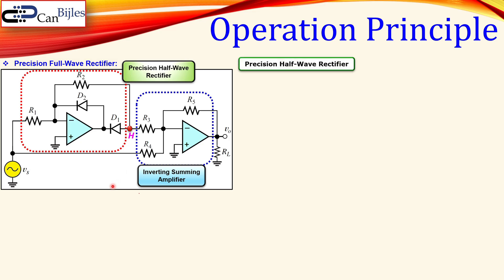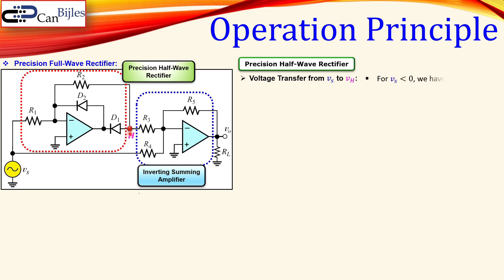Let's first look at our precision half wave rectifier transfer characteristics. The voltage transfer from the source voltage to node H — so VH — is already discussed: for negative values of VS, the output voltage will be zero, and for positive values it will be minus R2 over R1 times the input voltage, so it acts as an inverting amplifier.